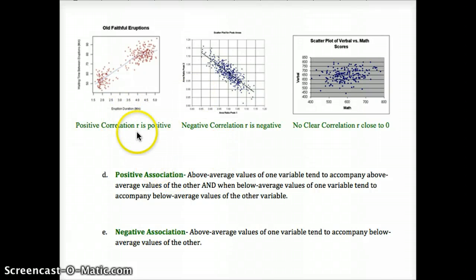A positive association would be a positive value of r, and that means above average values of our explanatory variable are accompanied by above average values of our response variable. Now, keep in mind that correlation is not causation. Just because we have a strong correlation doesn't mean the explanatory caused the response. There could be a lurking variable, something else causing them both to change.